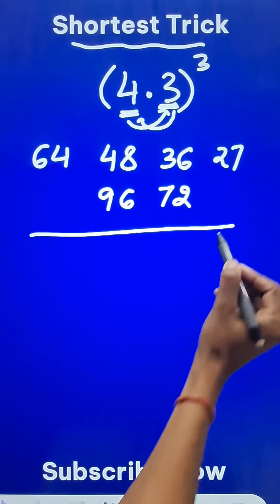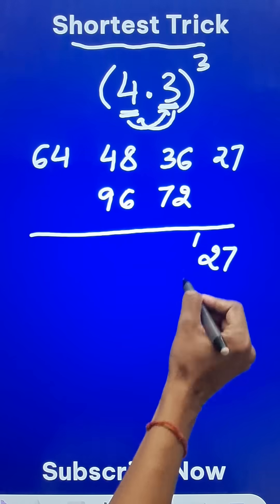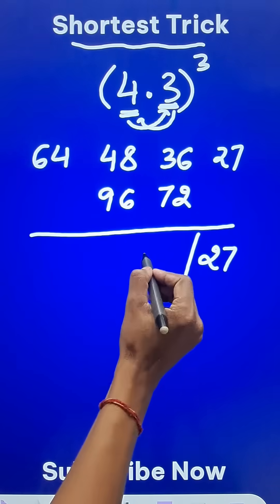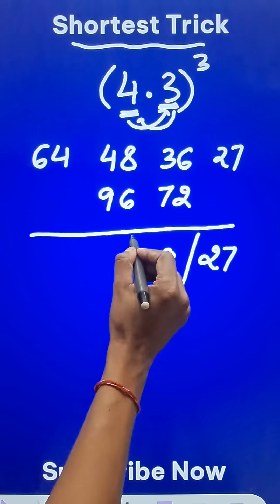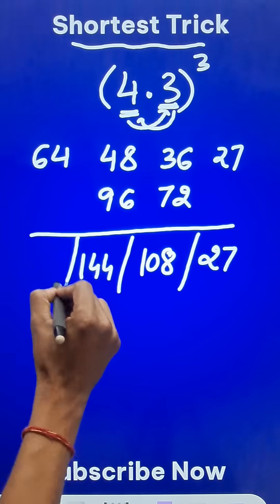Now let's put a horizontal line and start writing the sum of these numbers. 27 comes as it is, followed by the sum of these two which is 108, and then the sum of these two is 144, and finally 64.